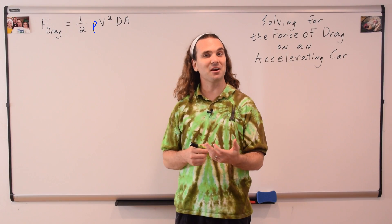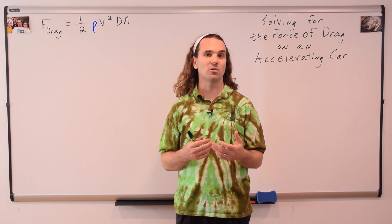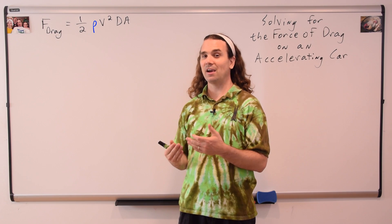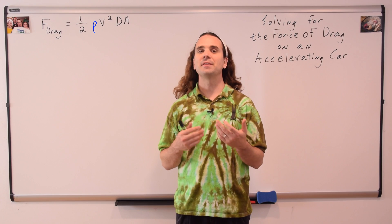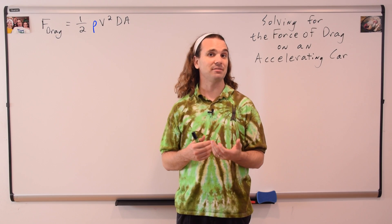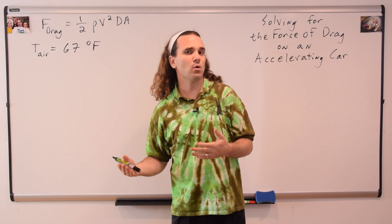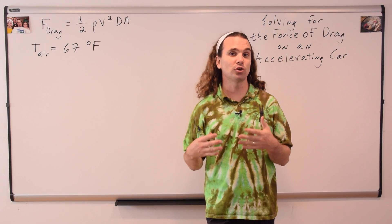Let's start with the density of air, which is the medium through which the car was traveling. The density of air depends on the air temperature, and the temperature of the air was 67 degrees Fahrenheit. However, we need the temperature of the air in degrees Celsius.